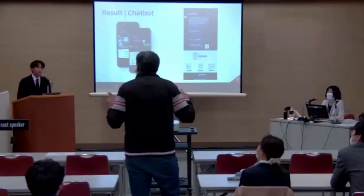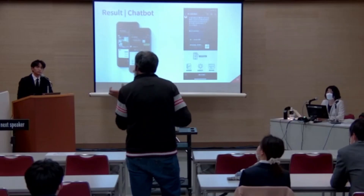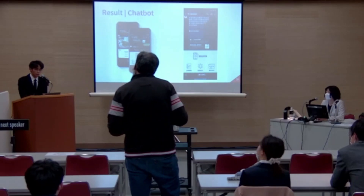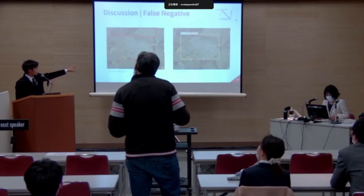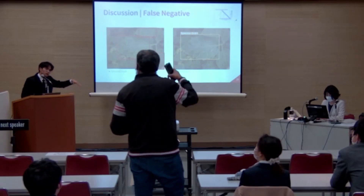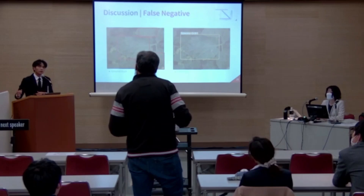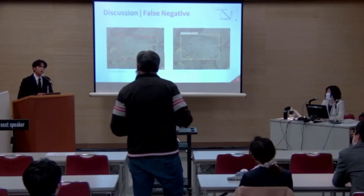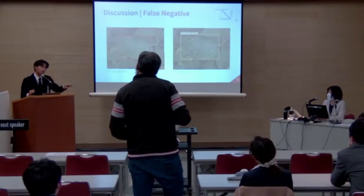The questioner asked about resolution and what happens if the image is taken from farther away with multiple leaves. The presenter confirmed the 640×640 resolution and explained that if four or five leaves appear in one image, it may cause misclassification or false negatives, because the lesions on the leaf would be too small for the model to detect.